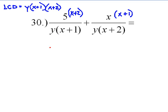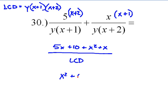So what I end up with is 5x plus 10 plus, this will become x squared plus x over the least common denominator. So let's combine like terms. We'll have x squared plus 6x plus 10 over the least common denominator.